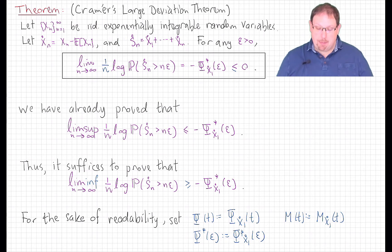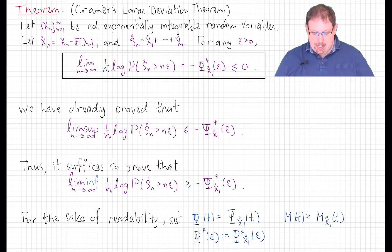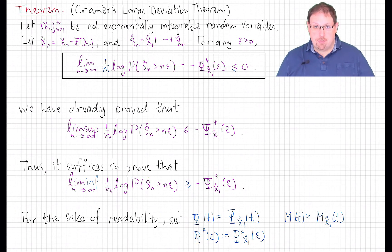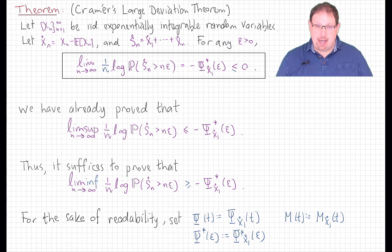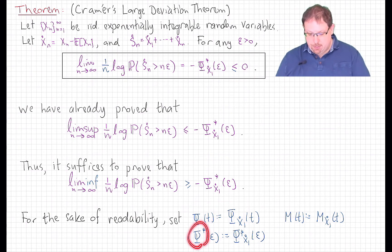We have already proved the upper bound part of this theorem. We now need to show the much trickier statement: that the liminf of 1 over n times that log probability is greater than or equal to that same bound. For readability throughout this proof, we will drop the explicit dependence of the analytic transforms on the random variable x1 centered, and instead refer to them as just psi, the Legendre transform as just psi star, and the moment generating function just as m.